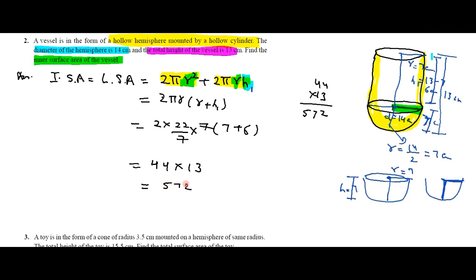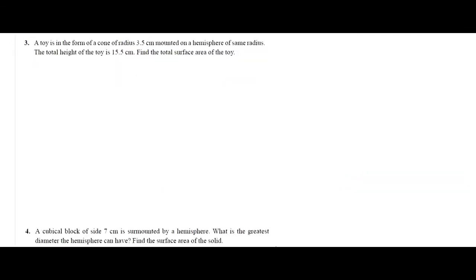Now putting in the values, the cylinder height is 6 centimeters. Since this is surface area, it always has units of square, so this is 572 cm².